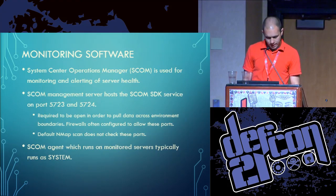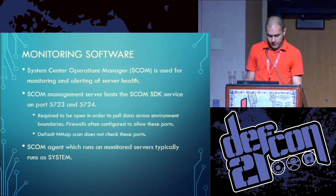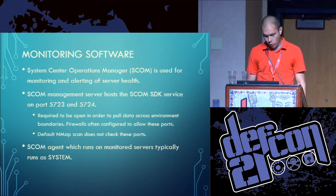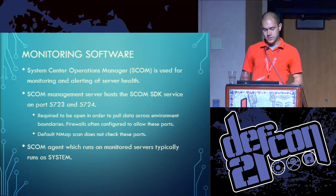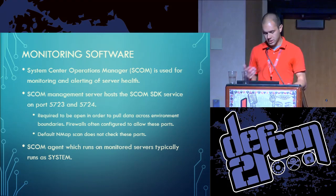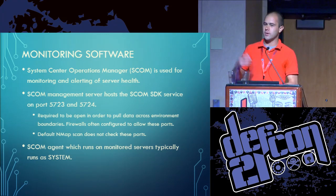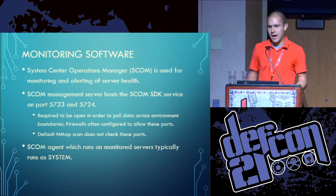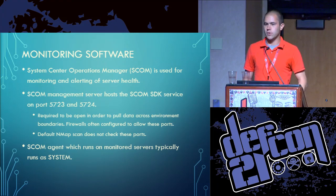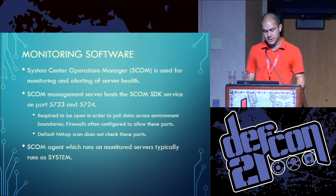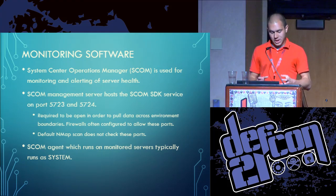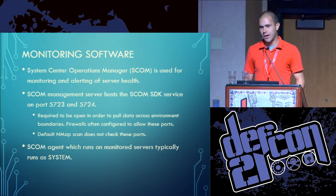SCOM is used for monitoring and alerting on health. The SCOM SDK service is what it uses to interact with the agents, and it's opened on ports 5723 and 5724. These need to be open if you want to access the SCOM management — to look at alerts and everything. Organizations often have these open in the firewall so they can act on alerts from outside the environment. NMAP won't scan for these by default, so you'll need to add them to the list. The SCOM agent runs on every monitored machine as local system, which means it has admin access.